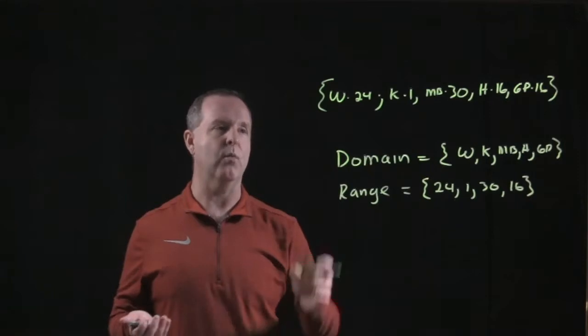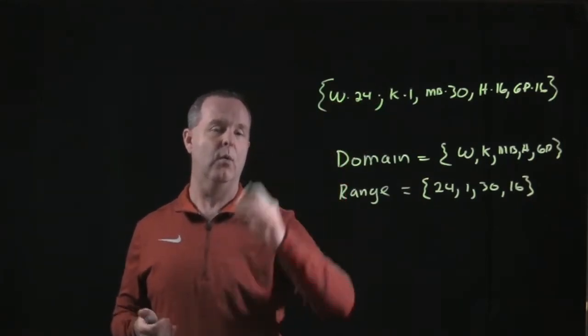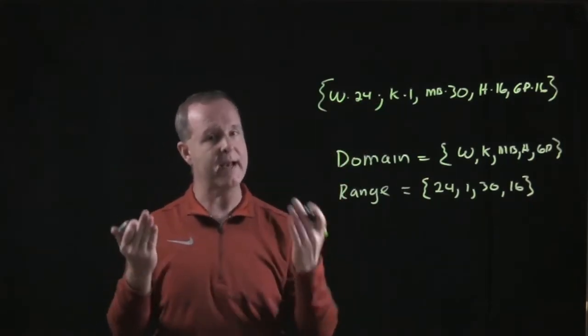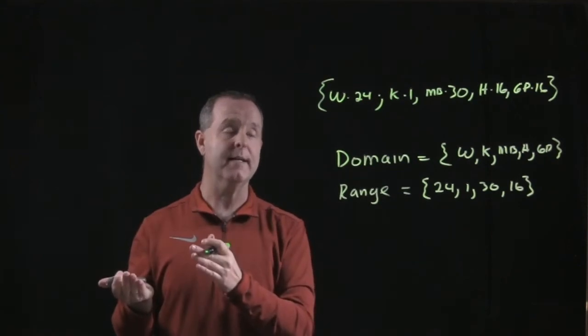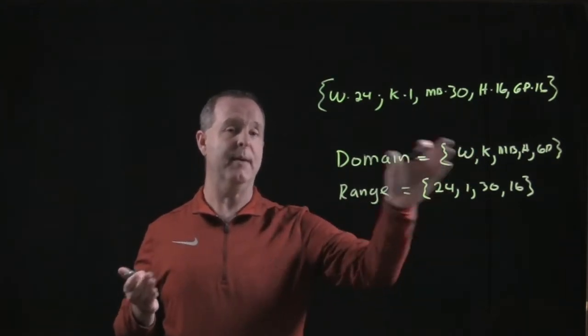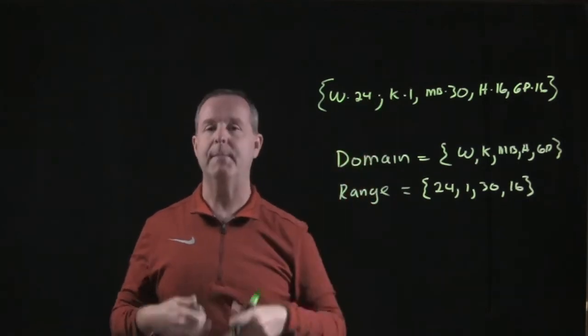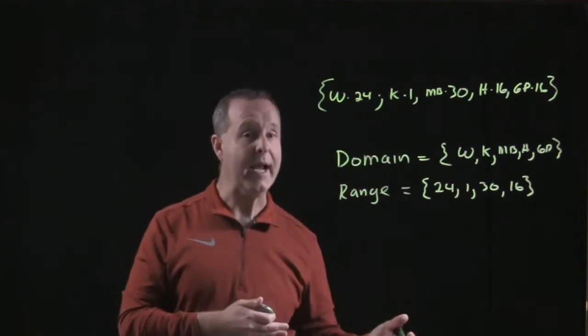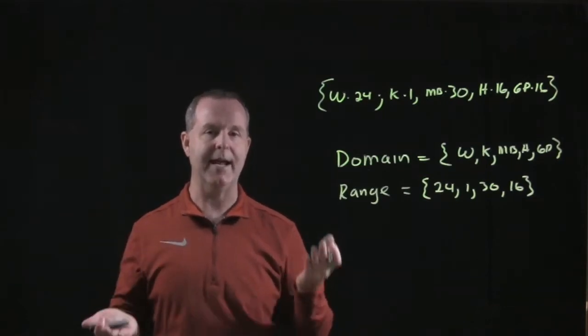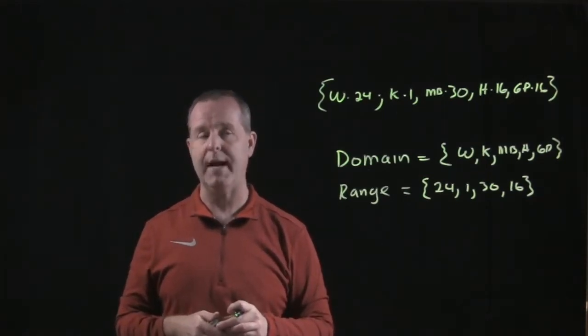So what we need to understand is that when we have an ordered pair, a relationship between one idea and another idea, the first idea represents an element in our domain. The second element represents an element in the range. So we need to get a handle on what's the domain and what's the range.